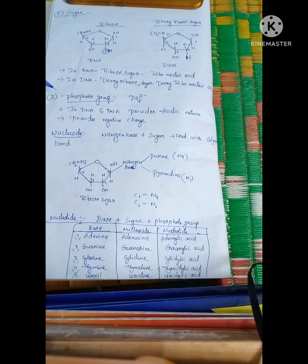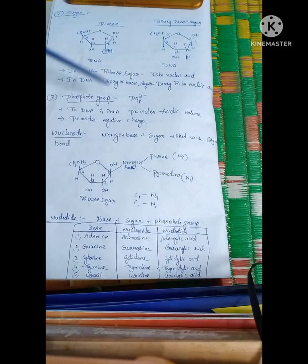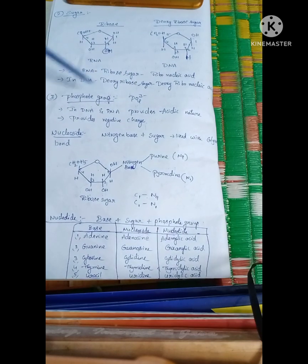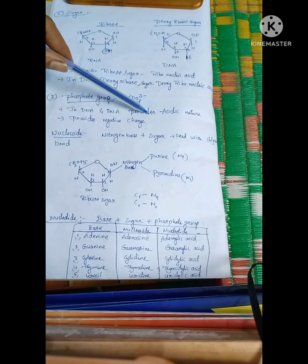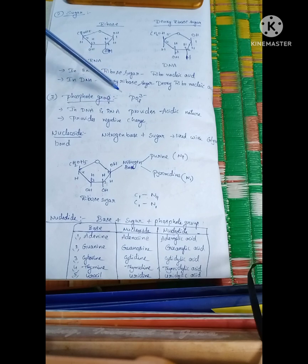The third component is the phosphate group. In DNA and RNA, this phosphate group is acidic in nature and carries a negative charge, which is why we call it nucleic acid.